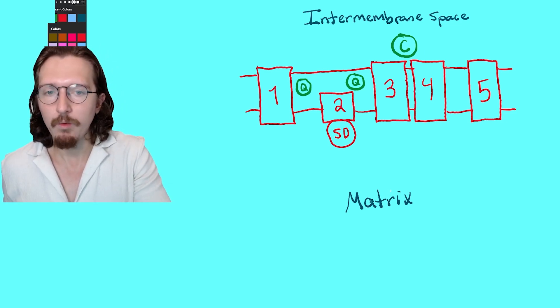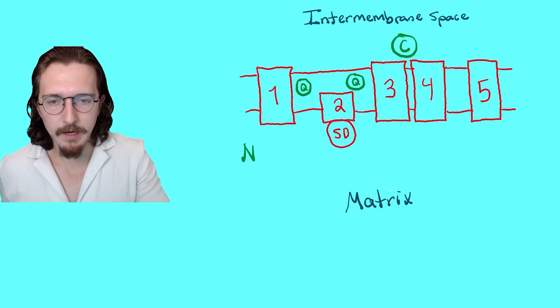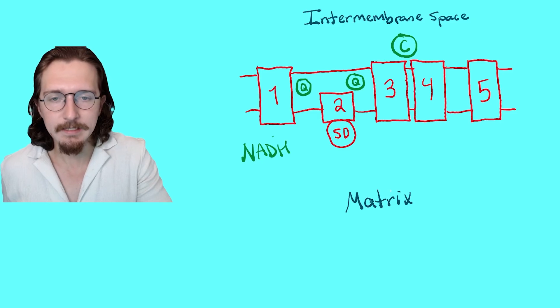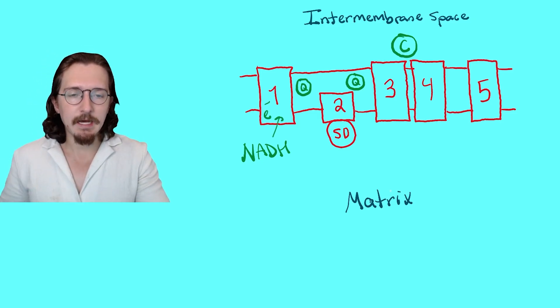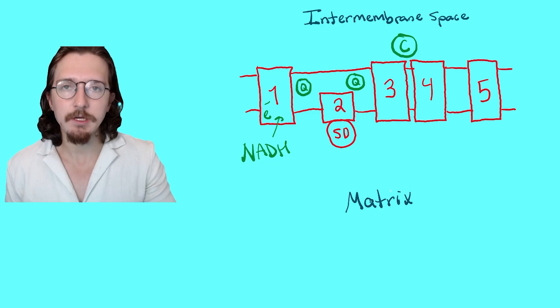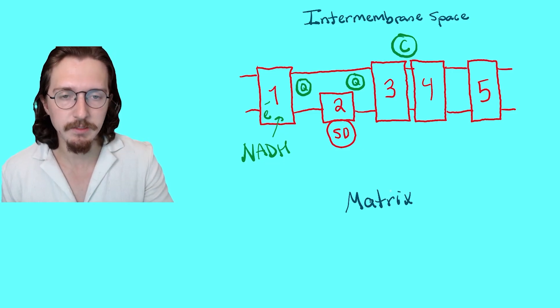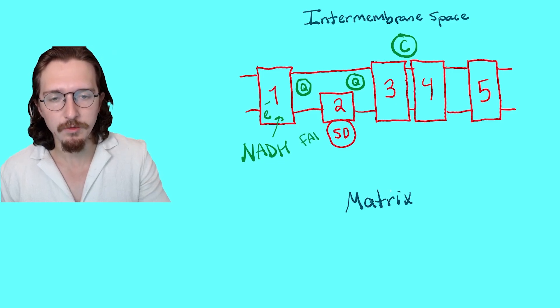So, what is actually going to happen? Well, remember that basically, you have complex 1, and you're going to have NADH, so this is an electron carrier, deliver electrons to complex 1. And then at the same time, via a reaction catalyzed by succinate dehydrogenase, which is an enzyme of the Krebs cycle, the citric acid cycle, you will have production of FADH2, and that will deliver its electrons directly to complex 2.